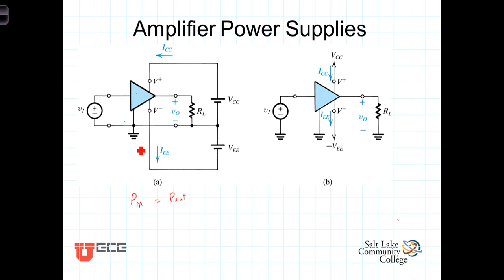But in an amplifier circuit, P in consists of the signal power in, call it P signal plus P DC, the power from the DC sources. And that is going to equal the power to the load plus any losses associated with the amplifier itself.